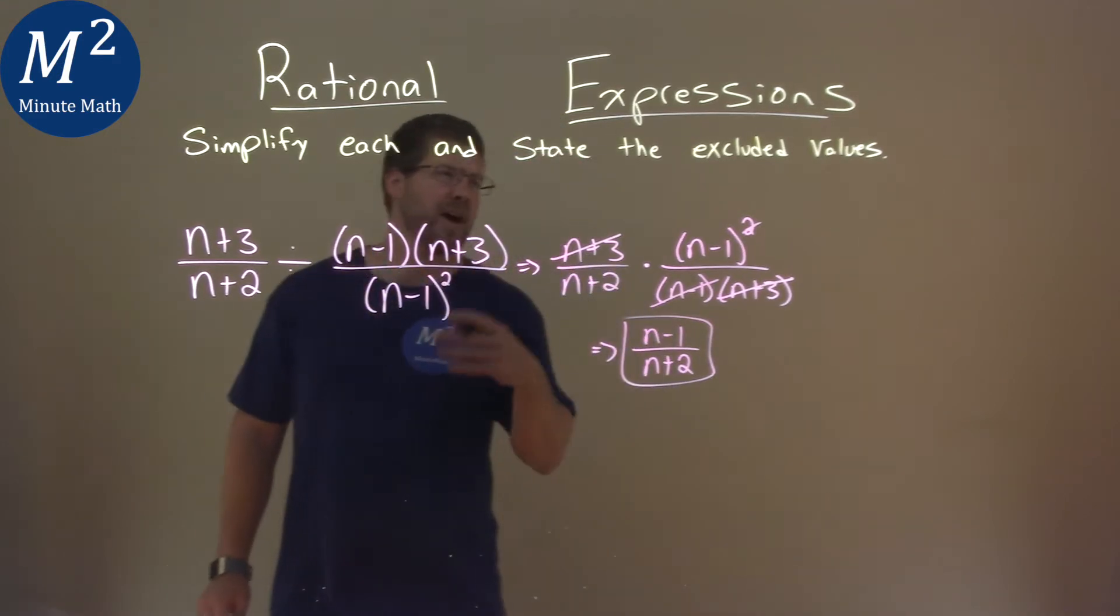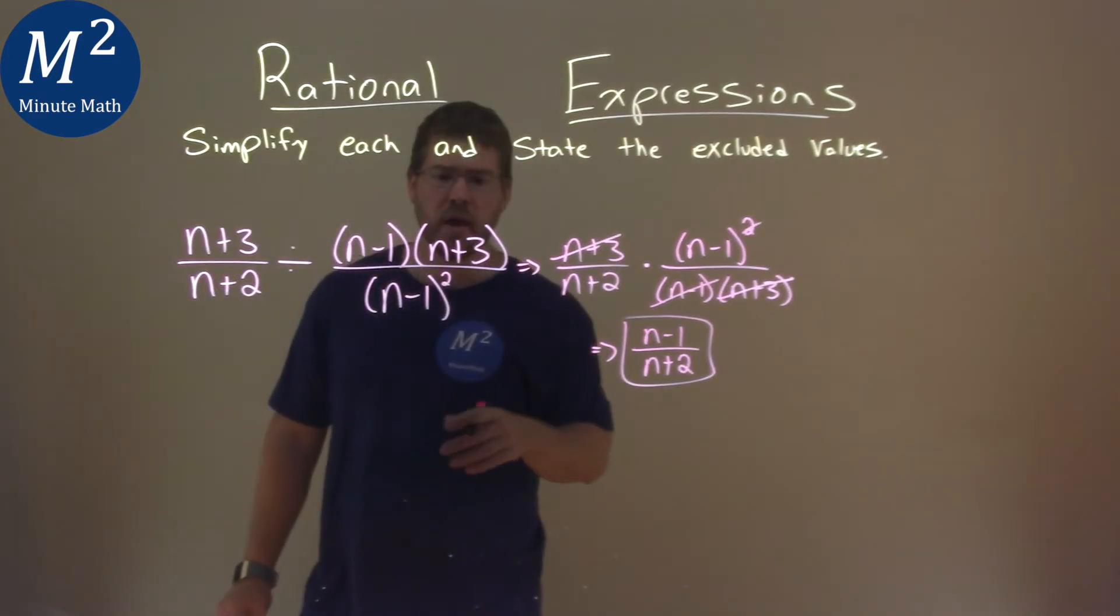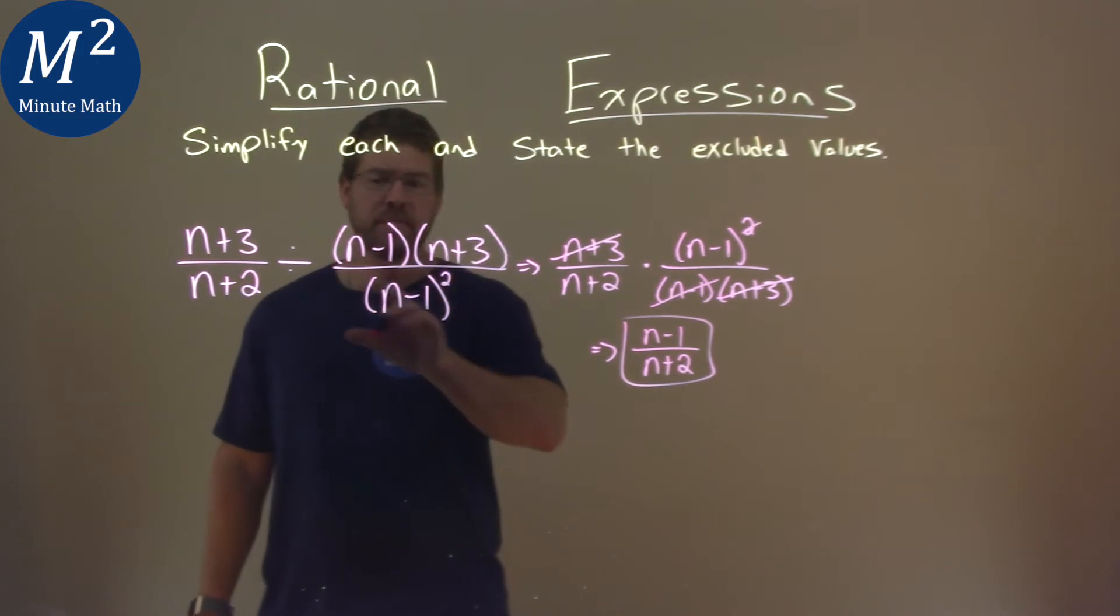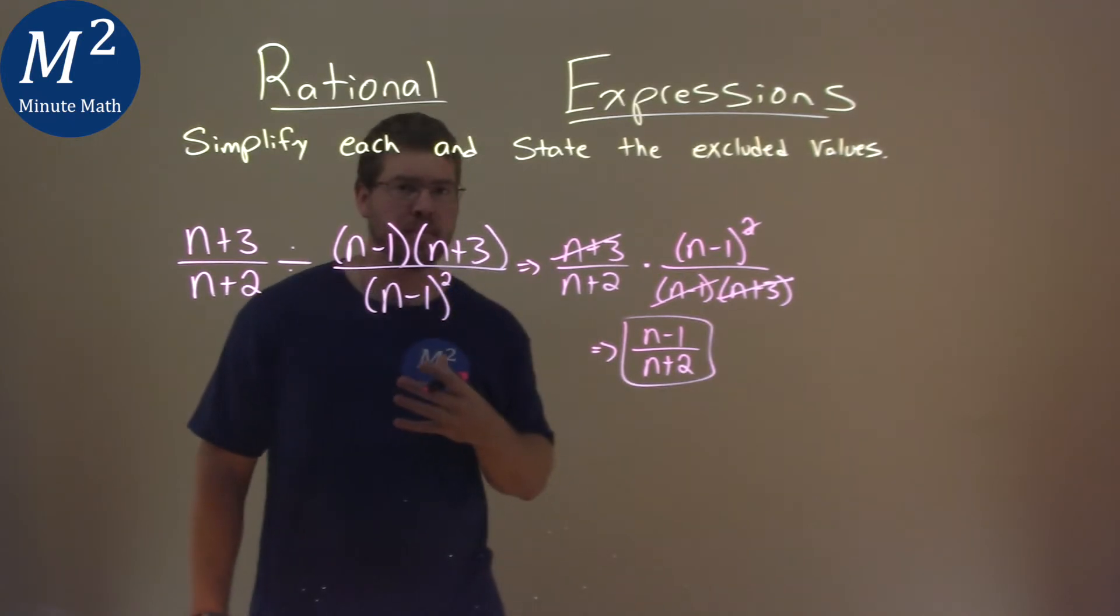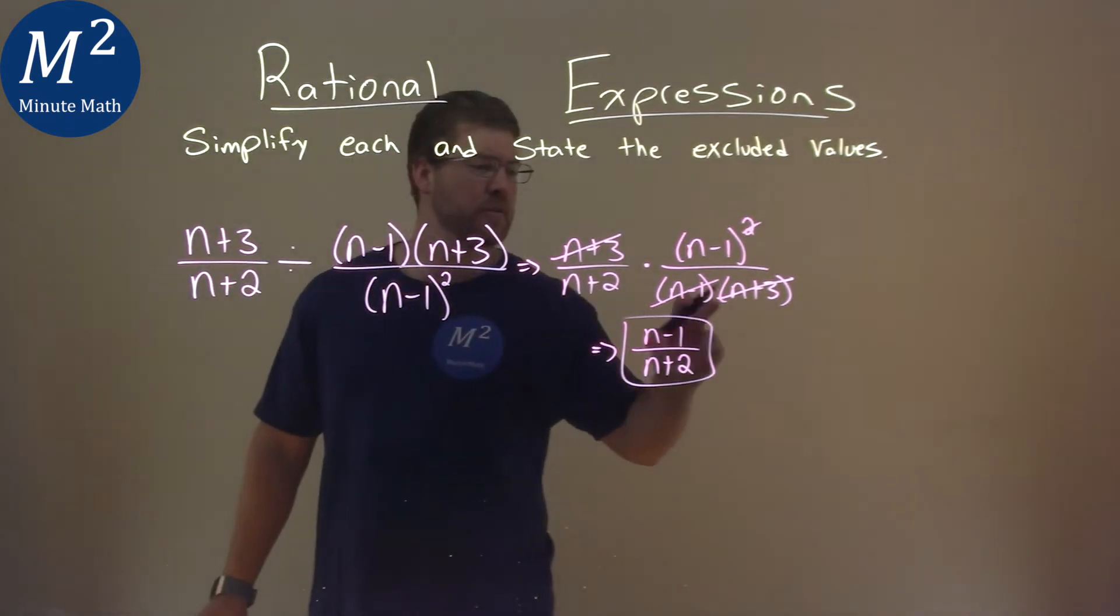But now we have to find the excluded values. So we look back at our original expression, but we notice there's that division again. And with our excluded values, with rational expressions, we can't have a 0 in the denominator. So that actually occurs right here.